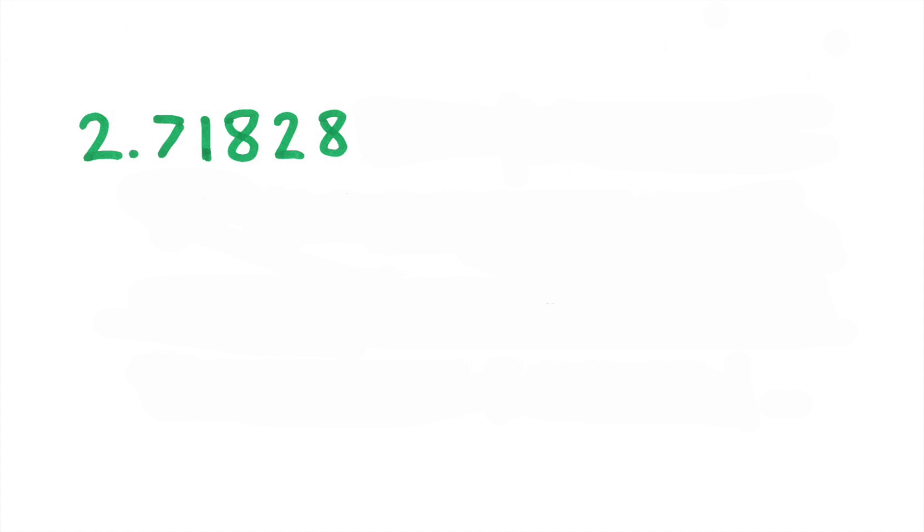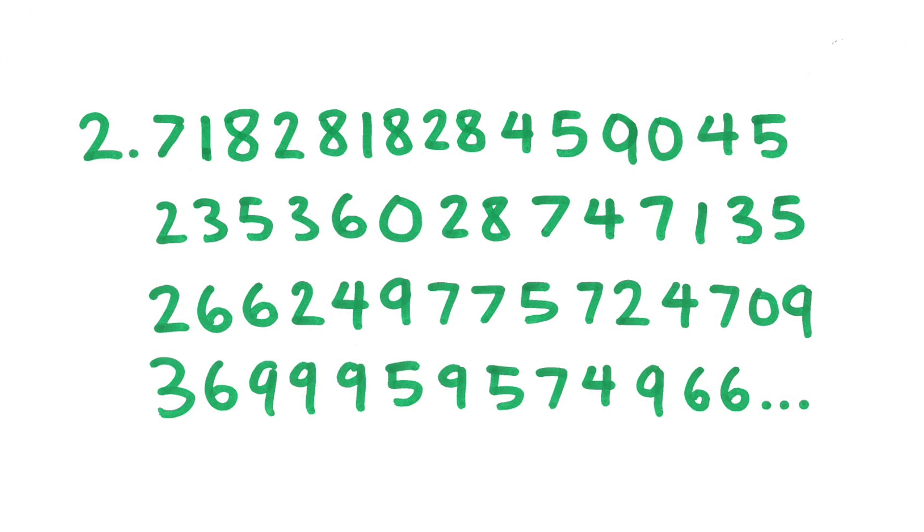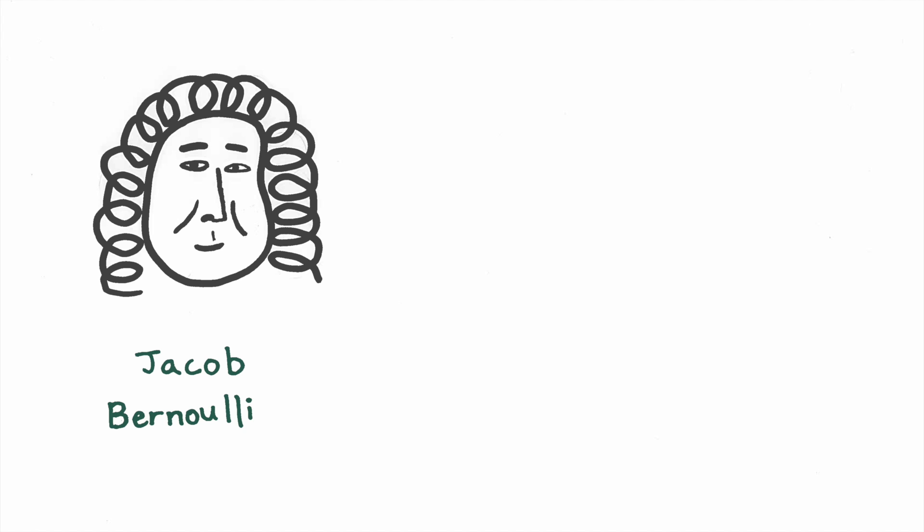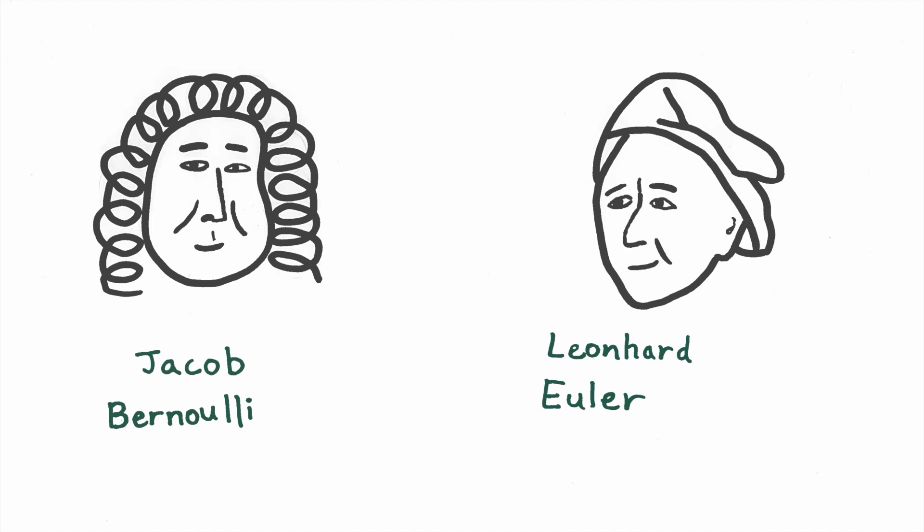It's about 2.718281828459045, and so on, and it was first defined by Jacob Bernoulli, but later, Leonhard Euler called it E, and the name stuck.